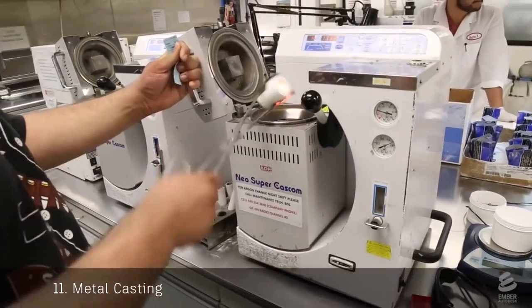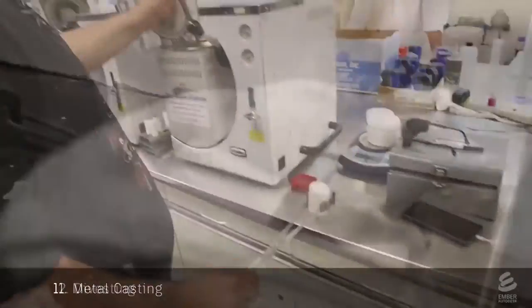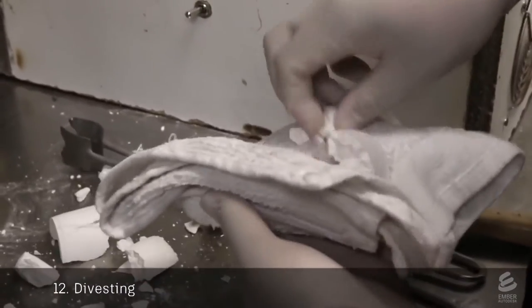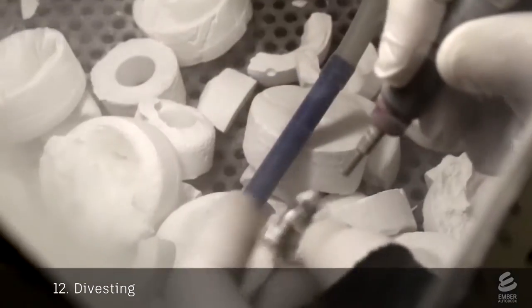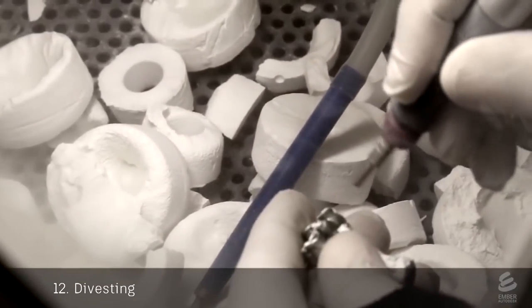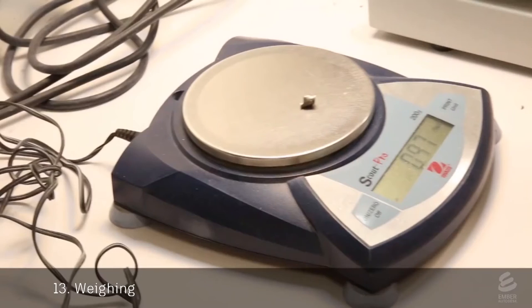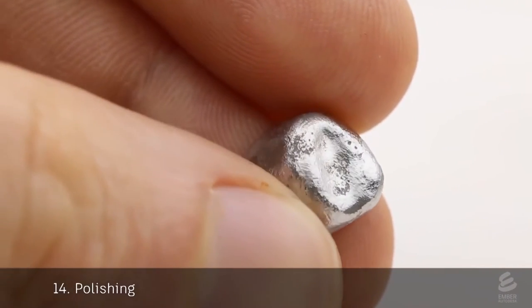The casting is removed from the machine and left to cool. In a process called divesting, a technician breaks apart the investment with a hammer and uses an air gun to remove any remaining pieces of investment. He cuts off the sprues and weighs the castings to determine the price. These castings then go through a polishing step.